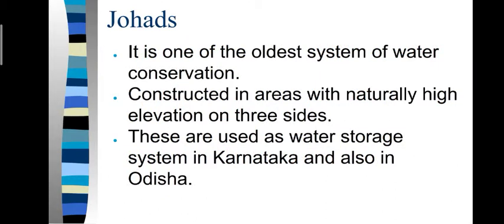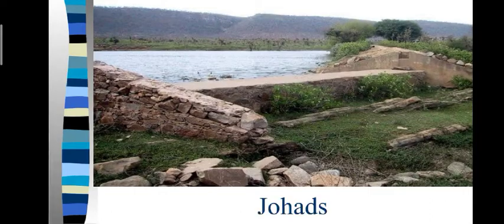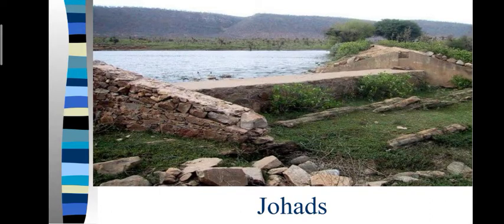Johats is one of the oldest systems of water conservation, constructed in areas with naturally high elevation on three sides. These are used as water storage systems in Karnataka and also in some parts of Odisha.